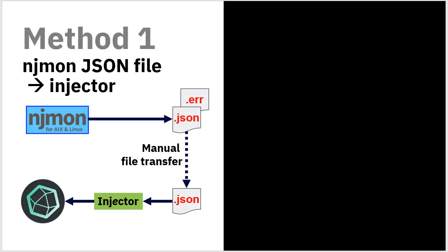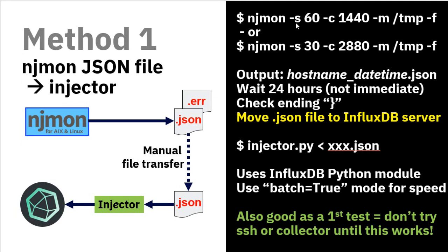So let's look at the simplest method one of using NJMon. We're going to run the command to create those two files, then do a manual transfer of those files to the machine running InfluxDB. Then we run a command called the injector on that JSON file, and that will push the data into the time series database. Here's the command: mine is at 60, so that's every 60 seconds, and 1440 is the number of minutes in a day.